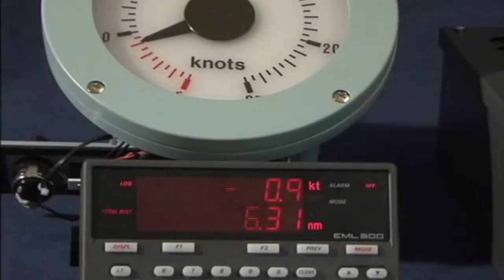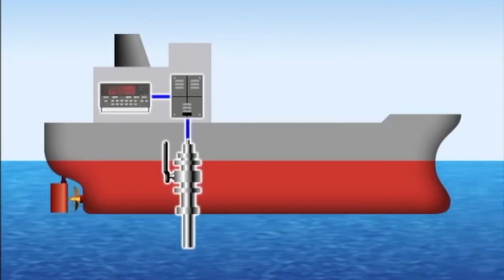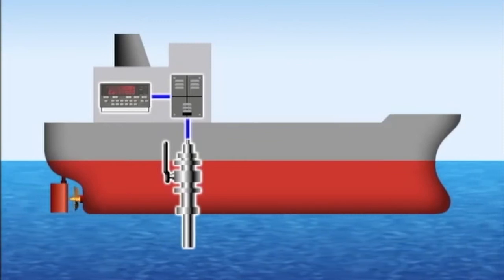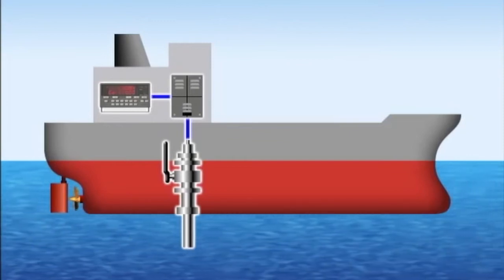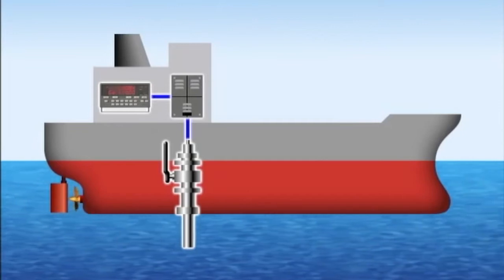The EM log also gives accurate speed indications at slow ahead and astern. The sensor protruding into the sea reduces the influence by the ship's wake and enables highly accurate measurement.